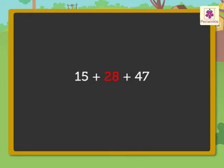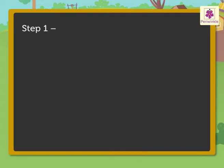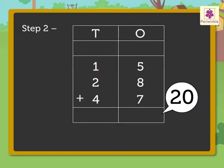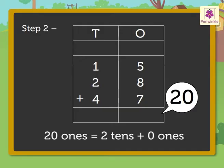Now, instead of counting the bamboo sticks, we can directly add the numbers 15, 28, and 47. Step one: write the numbers in the tens and ones columns. Step two: add the digits in the ones column — that is, 5 plus 8 plus 7, which is equal to 20. Regroup the twenty ones: twenty ones is equal to two tens plus zero ones. Carry the two tens to the tens column and write zero in the ones column.